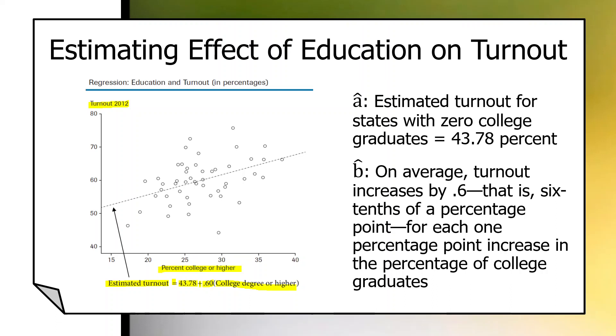Just review first. A-hat, this is the estimated turnout for states with zero college graduates of 43.7. B-hat, the interpretation, on average turnout increases by .6, that is, six-tenths of a percentage point for each one percentage point increase in percentage of college graduates.